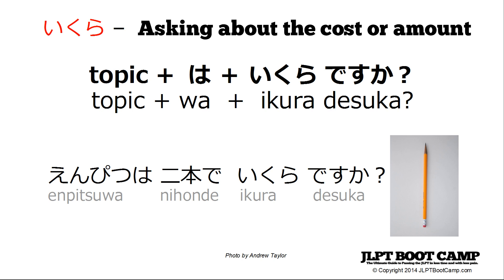For example, it was 'kono ringo' — this apple — or anything you want to know the price of. You can even point at something and say it if you're at a stand to find out what the price is of a certain item.